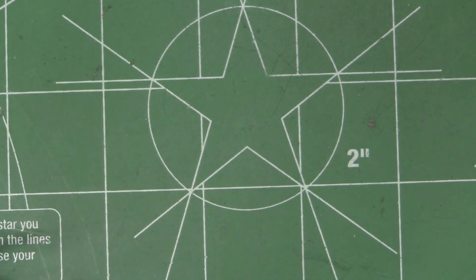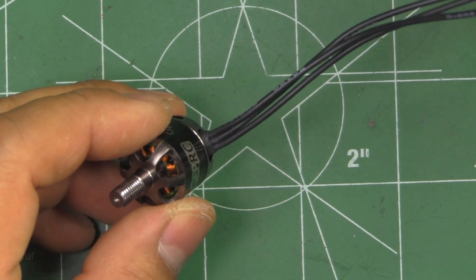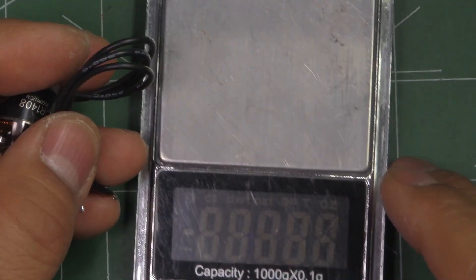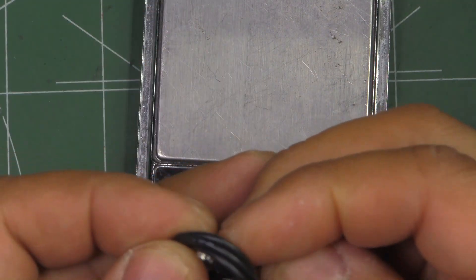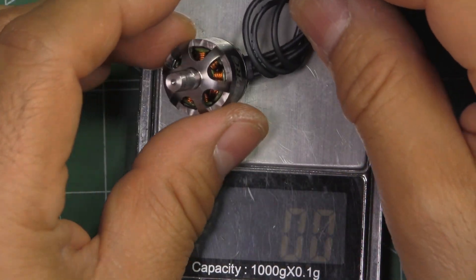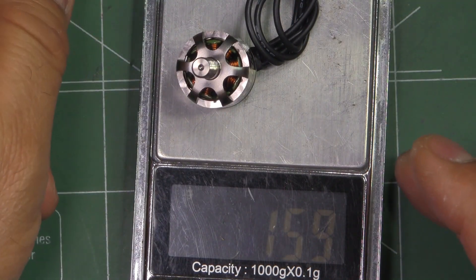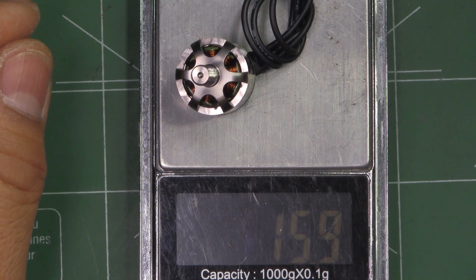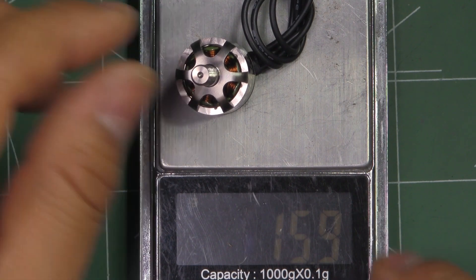So let's see what it weighs and they do give you about 100 millimeters worth of wire. So with that much wire let's see what it weighs and they're saying the motor weighs 15.2 grams.